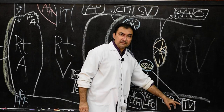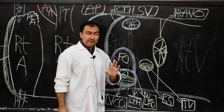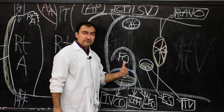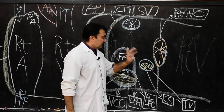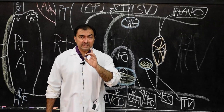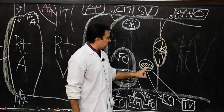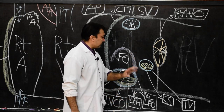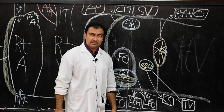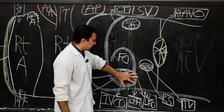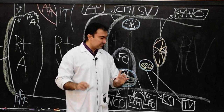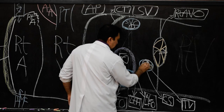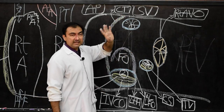Remember these two valves as they are frequently asked in MCQs: the eustachian valve is the valve of the inferior vena cava, and the Thebesian valve is the valve of the coronary sinus opening. The orifice of the coronary sinus is guarded by the incomplete semicircular Thebesian valve, located exactly between the orifice of the inferior vena cava and the right atrioventricular orifice. This is structure number three.